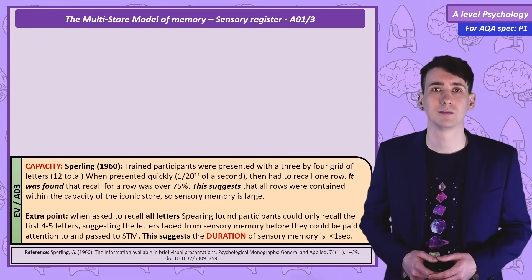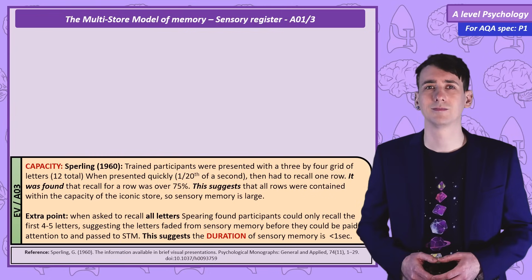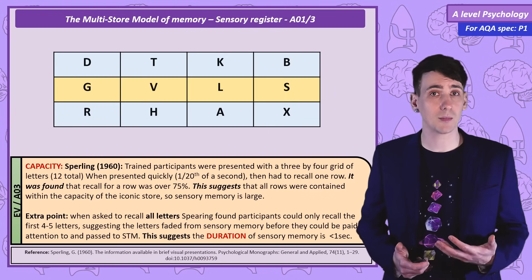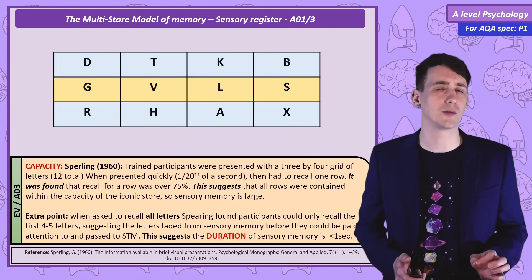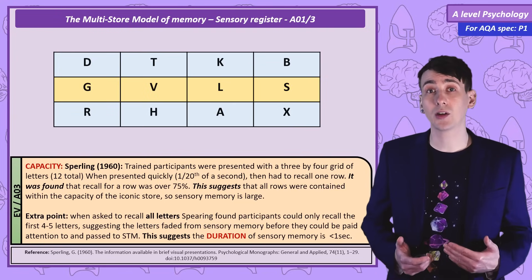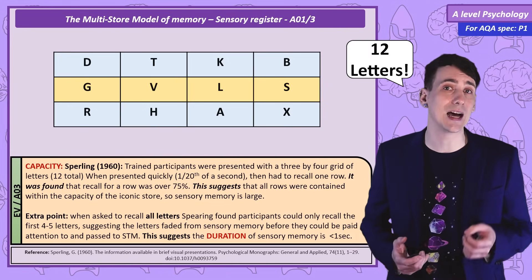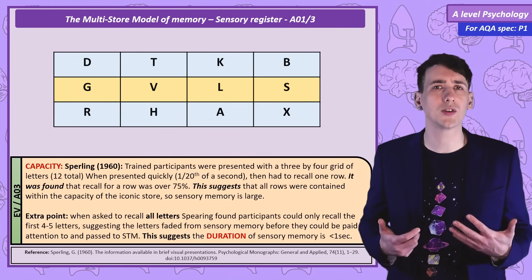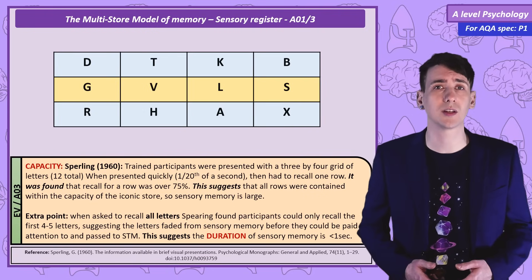Sperling found that with some practice, participants were very accurate. Since short-term memory only has a capacity of between 5 and 9 items, to be able to accurately recall a full row, sensory memory would have to hold on to all 20 letters in that moment. This suggests that sensory memory has a much larger capacity than short-term memory — and we're only considering visual or iconic sensory memory here.